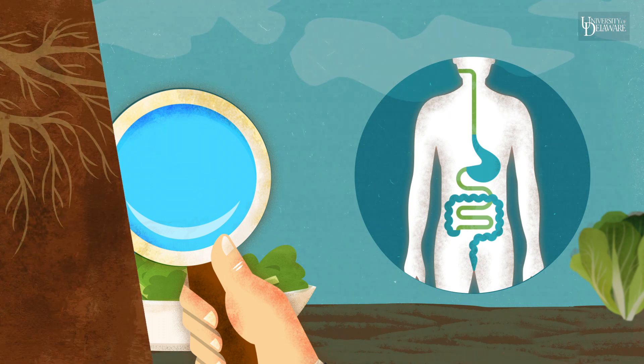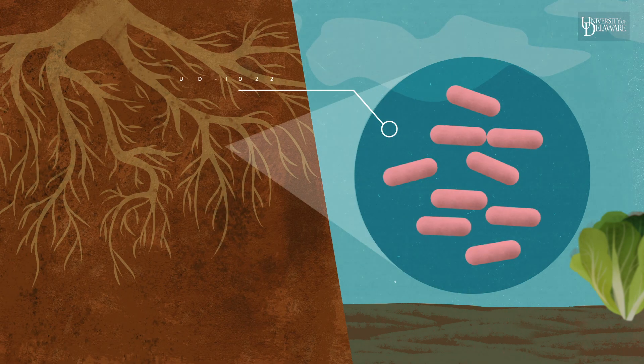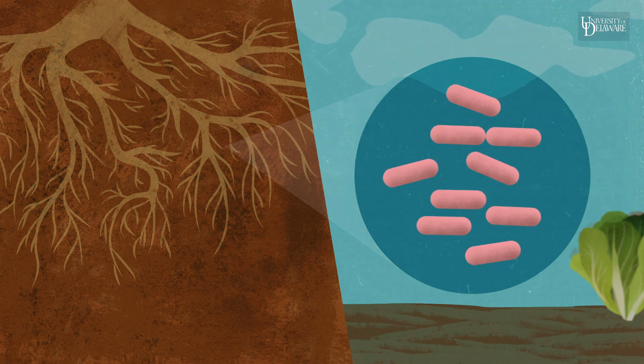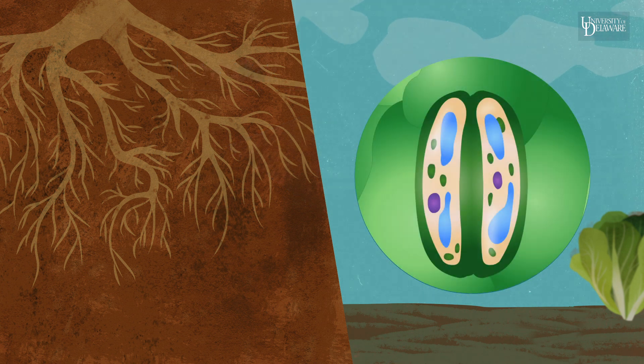Early research shows that a soil microbe called UD-1022, discovered at the University of Delaware, helps bolster plant defenses, keeping those stomate doors closed until the threat is gone.